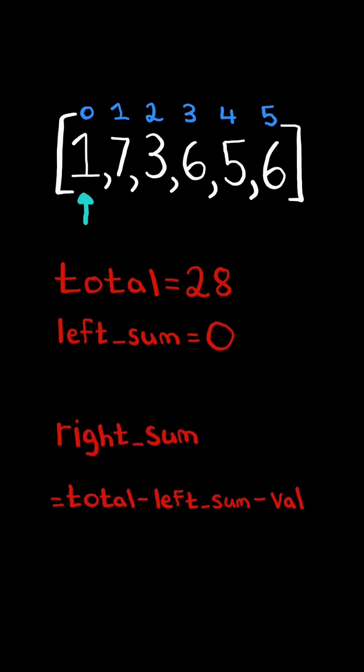We then calculate the right sum by taking the total and subtracting it by left sum and the current value. In this case, the total is 28, the left sum is 0, and the current value we are on is 1. So the right sum equals 27.